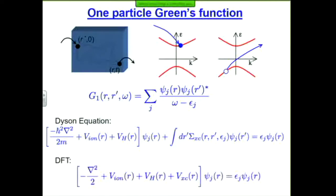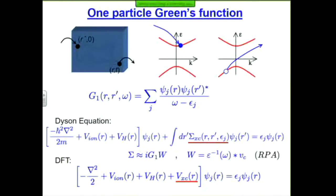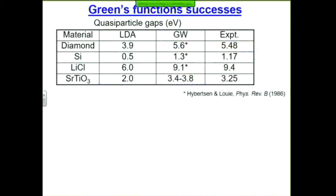Comparing to density functional theory: everything is the same except the VXC term has changed into sigma. This term is non-local — it's an integral operator, not local like VXC — and it's energy-dependent, which makes it very complicated. Just like VXC, we don't know what sigma is in principle, so we approximate. The GW refers to a formula, not a person: you multiply the Green's function G by something called W to get sigma. That's an approximation that's pretty good. W is the bare Coulomb interaction VC (that's 1/R) screened by a dielectric function.